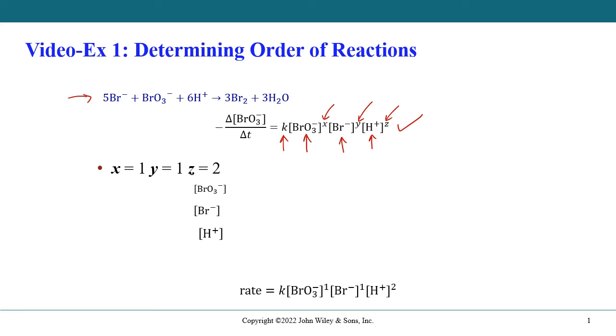So what does this mean? This means that the reaction is first order in the concentration dependence on the bromate anion. It is also first order in the concentration dependence of the bromide ion. And then finally, it is second order in the concentration of the H plus ion.